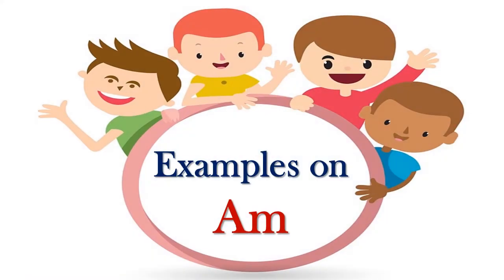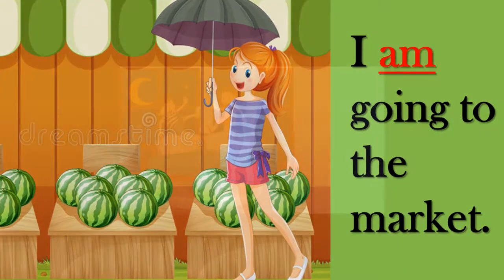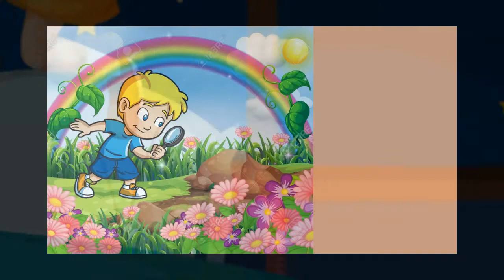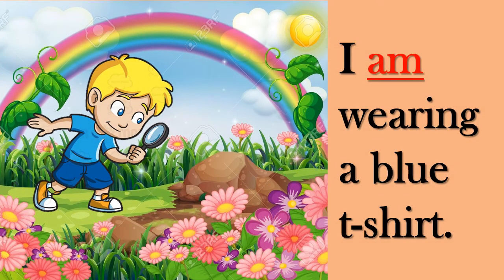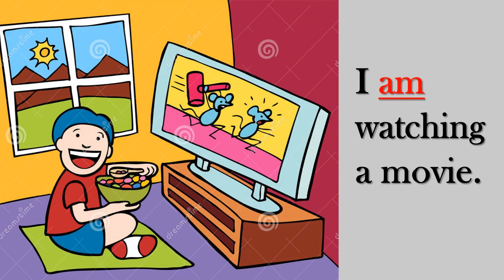Now let us take some more examples of the word 'am'. I am going to the market — here also 'am' is written after 'I'. I am jumping on the bed. I am wearing a blue t-shirt. I am watching a movie.